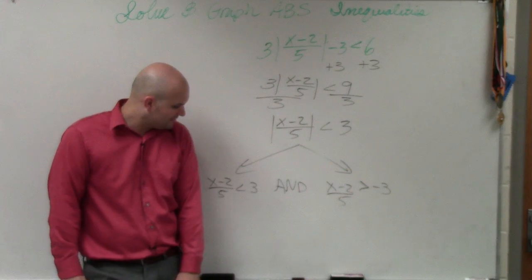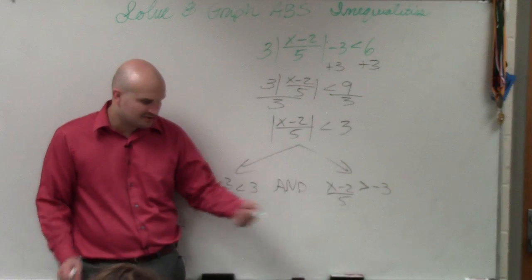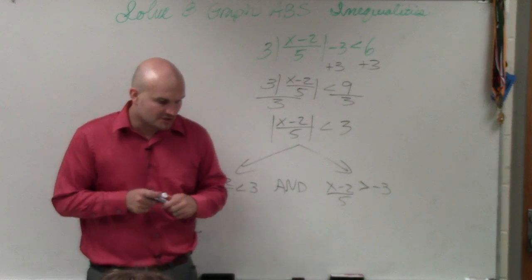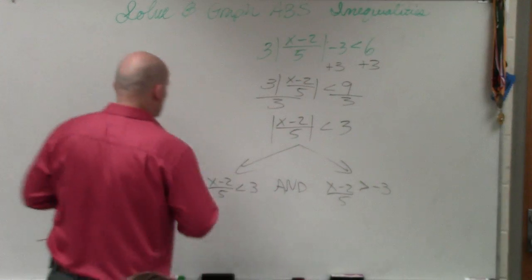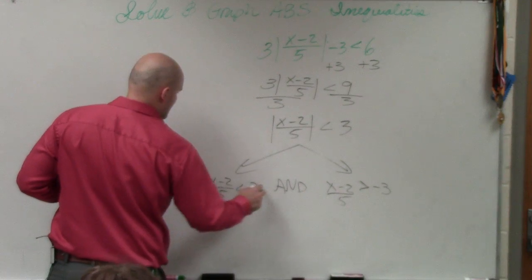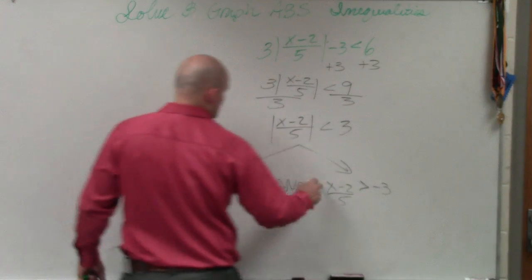So ladies and gentlemen, there's a couple different ways we can do this. The best thing I like to do is get rid of my fraction. So to get rid of my fraction in this case, I'm going to multiply by a 5. Let's do that on both sides.